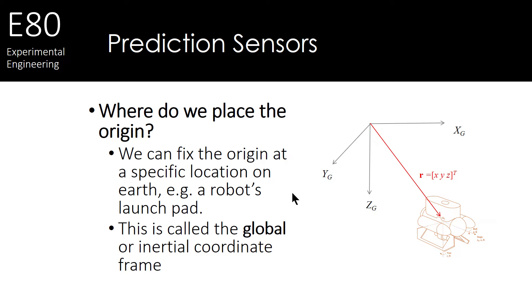Now, where do we place the origin? In one case, we're going to actually fix the origin some place in the world. Maybe a launch pad, maybe the end of a dock, something that we think is static with respect to the world. And we're going to call this particular frame that's anchored to a part of the world, like the end of a dock, as the global or inertial coordinate frame.